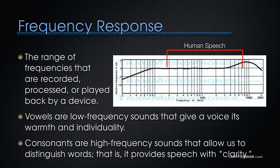Human speech is the range from roughly 200 cycles to roughly 7,000 cycles. Vowels are low-frequency sounds that give a voice its warmth and individuality. Consonants are high-frequency sounds that allow us to distinguish words — that is, consonants provide speech with clarity.